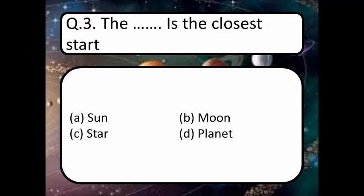The dash is the closest star. Read your options: Sun, Moon, Star, Planet — think about the correct answer. The correct answer is option A: Sun. The Sun is the closest star.